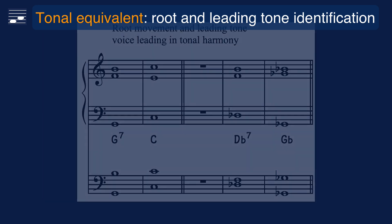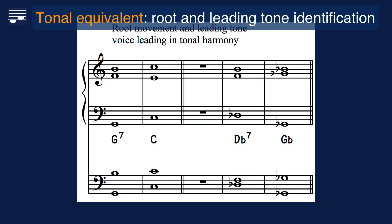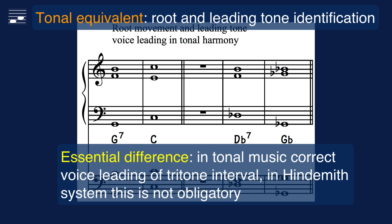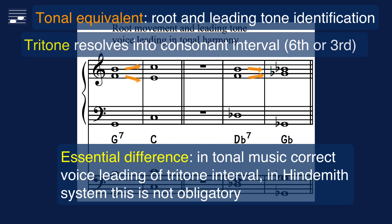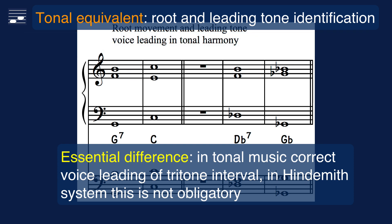For reference I'll illustrate the same process in a fully tonal context. However, we now find an essential difference with the Hindemith approach. In tonal harmony we apply proper voice leading to the tritone interval — this must resolve stepwise into a consonant 3rd or 6th. That is not obligatory in Hindemith harmony; some examples in his book may resolve stepwise, but not necessarily. Hindemith uses the leading tone identification for a quality statement about chord connections in the progression, as we will see next.